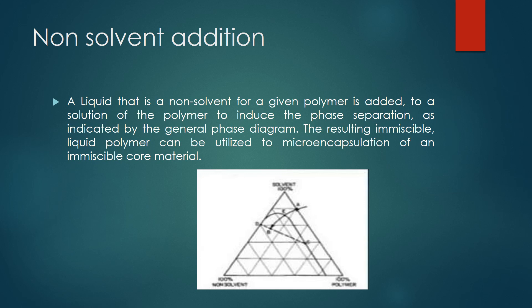The third technique is non-solvent addition, which changes the solubility of the polymer. A liquid that is a non-solvent for the given polymer is added to the polymer solution to induce phase separation. This is represented by a phase diagram with three triangle points: solvent, non-solvent, and polymer. Point C of the phase diagram shows the concentration of solvent, non-solvent, and polymer at which phase separation takes place, and that precipitated polymer is then utilized for coating the drug particles.